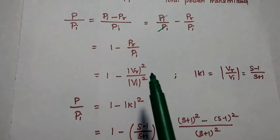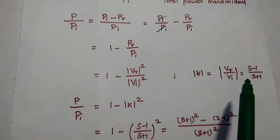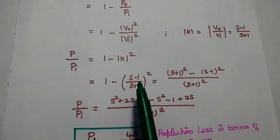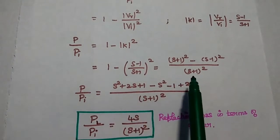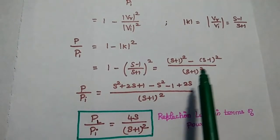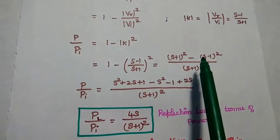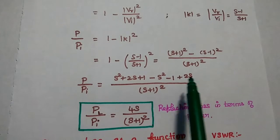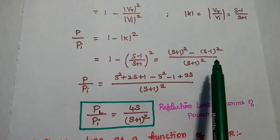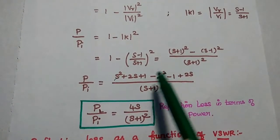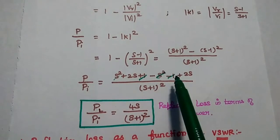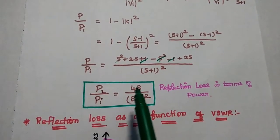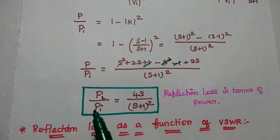The term Vr/Vi can be written as K, which equals (S − 1)/(S + 1), where S is the standing wave ratio. So P/PI equals 1 minus K². Replacing K with (S − 1)/(S + 1), we get: [(S + 1)² − (S − 1)²] divided by (S + 1)². Expanding — (S² + 2S + 1) minus (S² − 2S + 1) — the S² terms cancel and the constant terms cancel, leaving 4S. Therefore, the power delivered to the load PL divided by PI equals 4S divided by (S + 1)².